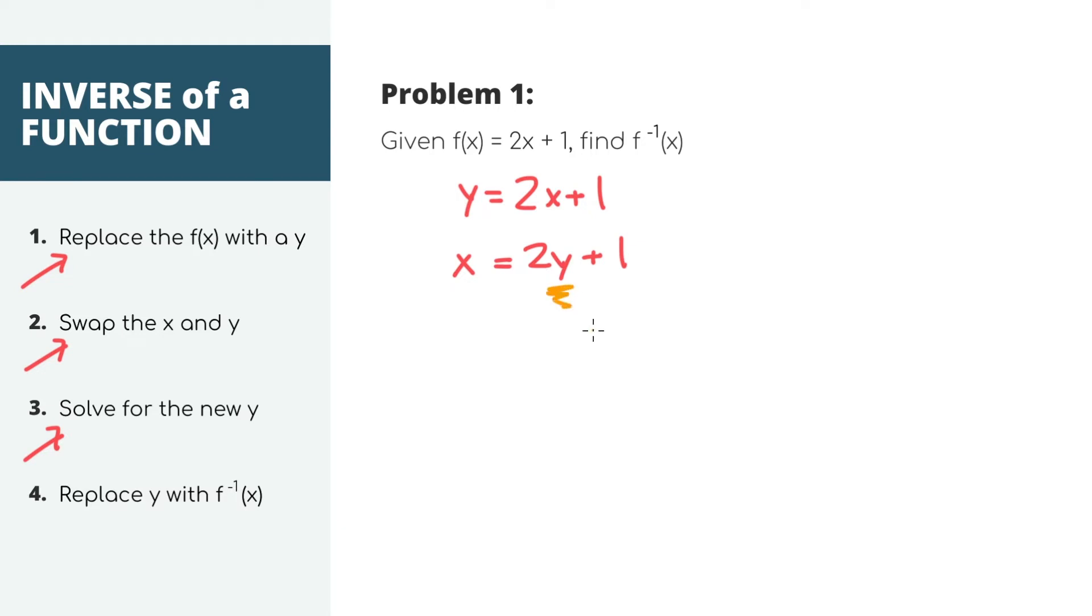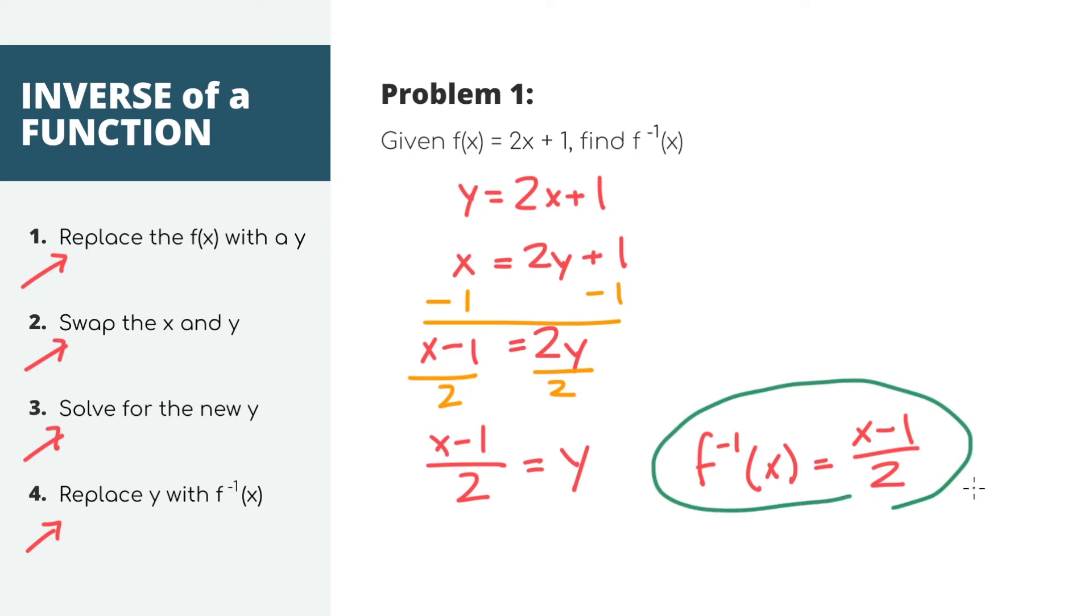So this is our y, right? To get it alone, we need to undo the plus 1 by doing the opposite and subtract 1. Everything we do to one side, we need to do to the other. Now we have x minus 1 equals 2y. In order to undo that, we need to divide by 2 on both sides. We now have x minus 1 divided by 2 equals y. Our final step is to put it back into function notation. We need to replace this new y with the inverse of f of x. So for our final answer, we have that the inverse of f of x is x minus 1 over 2.